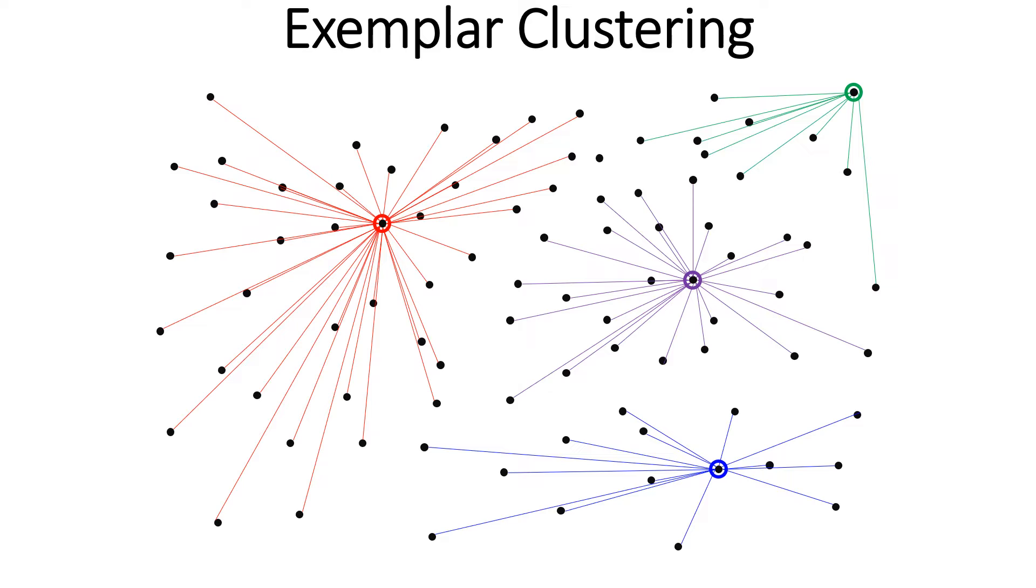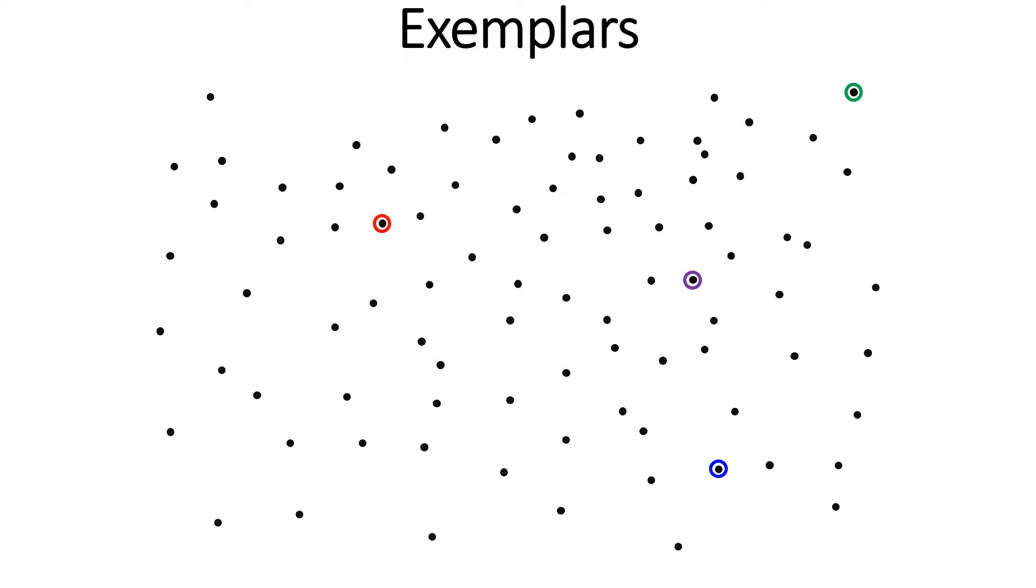Each point is served by one and only one exemplar. Here in this figure, each line connects a point to its own exemplar. Note that the exemplars are points too. This is how Exemplar Clustering like Affinity Propagation differs from other methods like the K-Means algorithm.